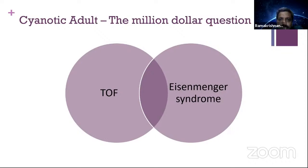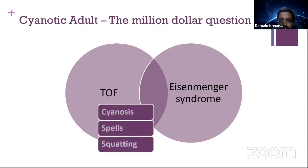How do you differentiate between them from history alone? What is the onset of cyanosis? If onset is very early, it's likely tetralogy-like physiology. History of cyanotic spells and squatting are important clues. Some percentage of Eisenmenger patients can have squatting, and some complex Eisenmenger can have cyanosis at birth. But if cyanosis is within one year of life, if there are cyanotic spells, and if there is a categorical history of squatting, then it is likely tetralogy — that is the clear-cut answer.